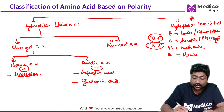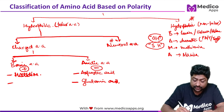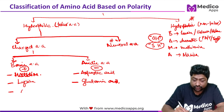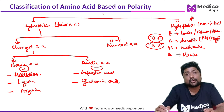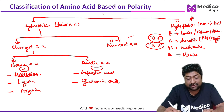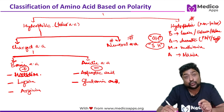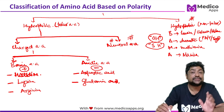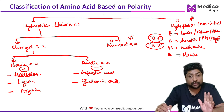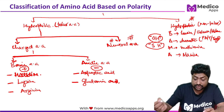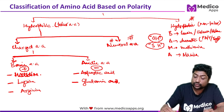The basic amino acids are histidine, lysine, and arginine — these are the three very important basic amino acids. Everything else falls under neutral amino acids.